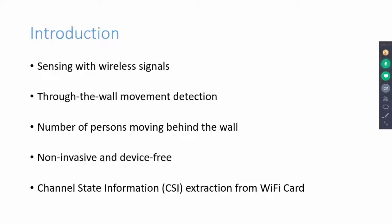CSI can capture effects induced by movement of persons. We evaluate the performance of our system for a challenging scenario like a 13-inch thick brick wall and our results show that our system can predict up to 3 moving persons with maximum average accuracy of about 97%.